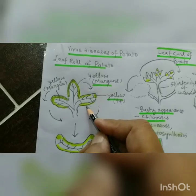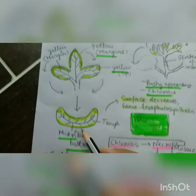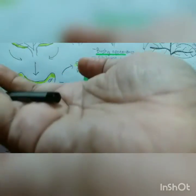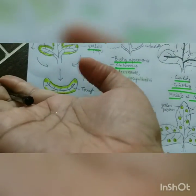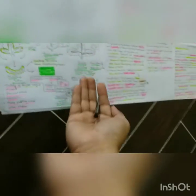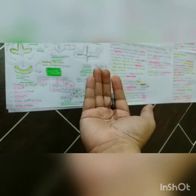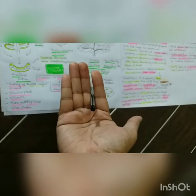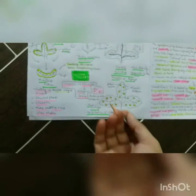Compare this with late blight of potato caused by Phytophthora infestans, where spots come at the tips and margins — but here, the tips and margins become yellow. They start rolling inward and form a trough-like shape. In the trough, the midrib is at the bottom. When you see your hand curled like a shoestring, you remember mosaic of papaya; when you see your hand like this with the midrib at the bottom, you remember leaf roll of potato.